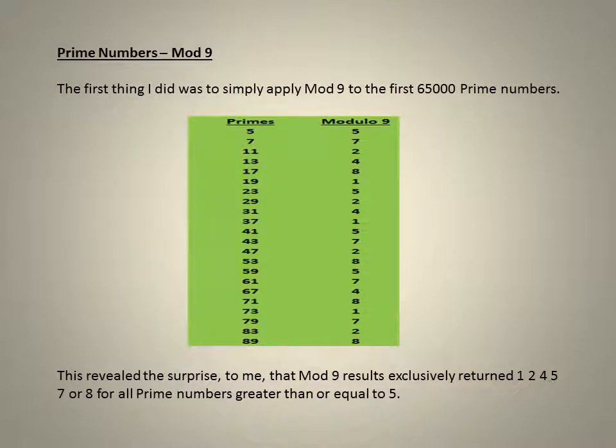The first thing I did was to simply apply mod 9 to the first 65,000 prime numbers. This revealed the surprise to me that mod 9 results exclusively returned 1, 2, 4, 5, 7 or 8 for all prime numbers greater than or equal to 5.